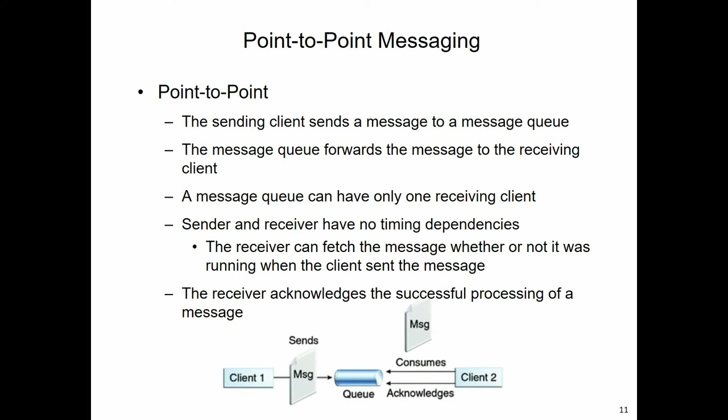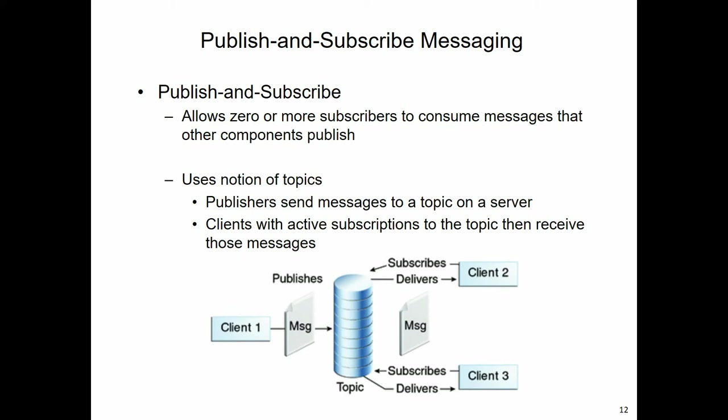With a queue, there is only one possible recipient - one client at the end of the queue that will receive the messages. In contrast, the publish-and-subscribe mechanism will allow there to be multiple clients that receive messages sent by the sender. So we can have zero or more subscribers that will consume messages published by the sender.